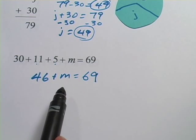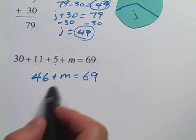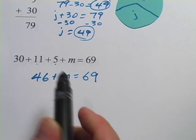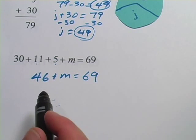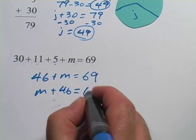And that's only slightly different from the equations we were looking at before. In the other ones, the letter came first. But because this is a plus sign, it doesn't really matter. 46 + m is the same as m + 46. You could switch those around all day if you want to.